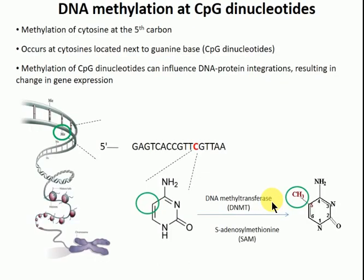Let's start by introducing the first one: DNA methylation. Basically, DNA methylation is the addition of a methyl group to the fifth carbon position of a cytosine base that is next to a guanine base. This happens via an enzyme known as DNA methyltransferase, or DNMT for short. This enzyme removes a methyl group from a substrate known as SAM — S-adenosylmethionine — and adds it to the fifth carbon position of a cytosine located next to a guanine base, creating a methylated cytosine.